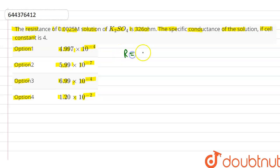In our question given, the resistance is equal to 326 ohm and the cell constant that is K is equal to 4, and we find the value of specific conductance or we can say conductivity.